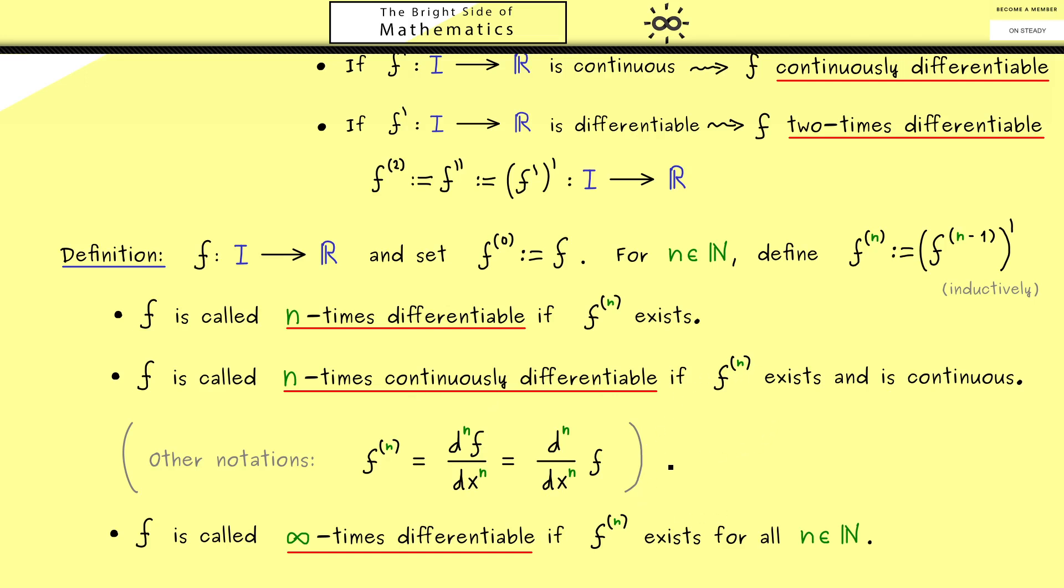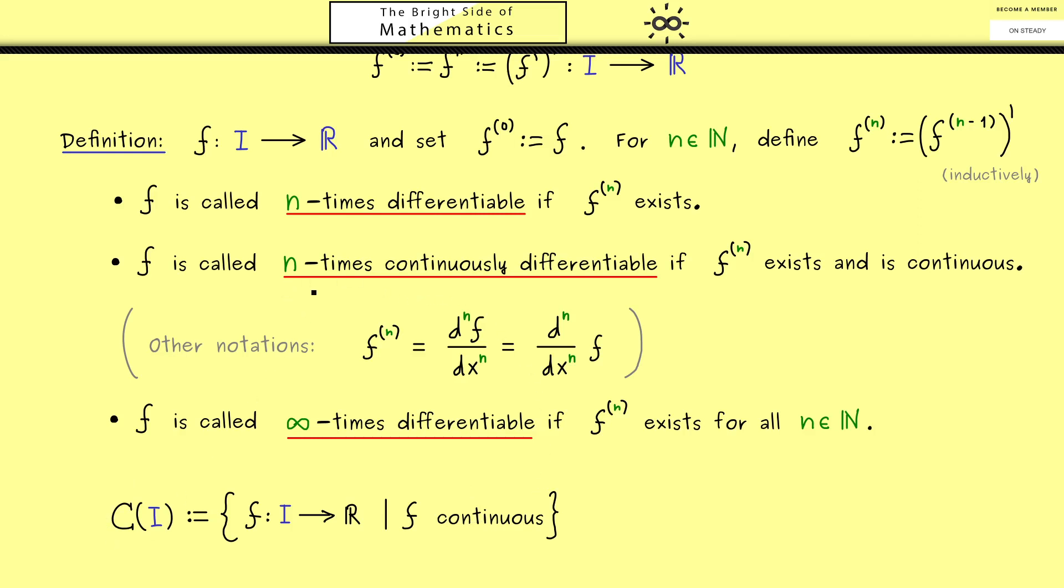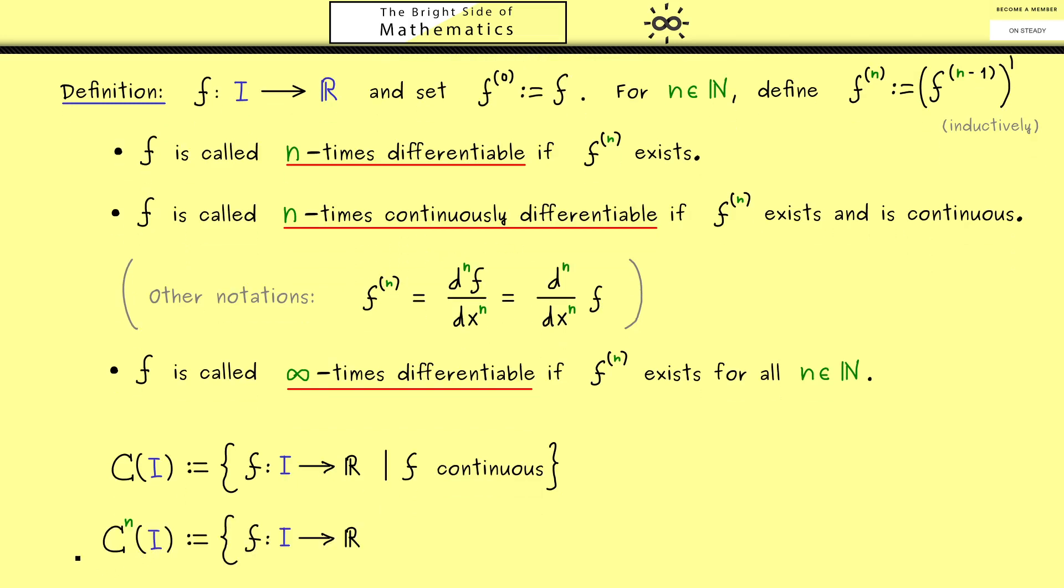Then in the next step I can introduce you to some important notations for sets of functions. Indeed in analysis we often have a capital C with a domain I, and this represents the set of all functions f defined on the interval I with the property that f is a continuous function. Now it's not so surprising that we also have a C with an upper index n, and this one should include all n times continuously differentiable functions. So we write C to the power n of I which contains all the functions f with the property that f is n times continuously differentiable, and of course we use this definition for all natural numbers n.